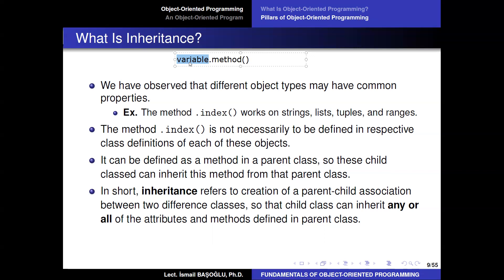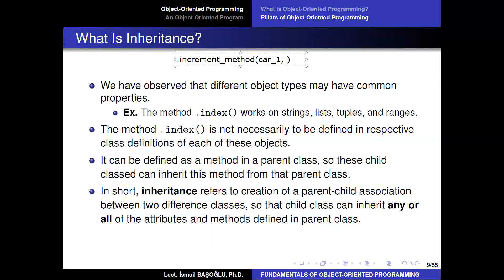The interpreter searches the method name inside the class definition. If it finds an increment method defined in the Car class, it applies what that function definition does — passing the object as the first argument to replace the self parameter. So first it identifies the object type, then searches the method in that class definition, then applies it.